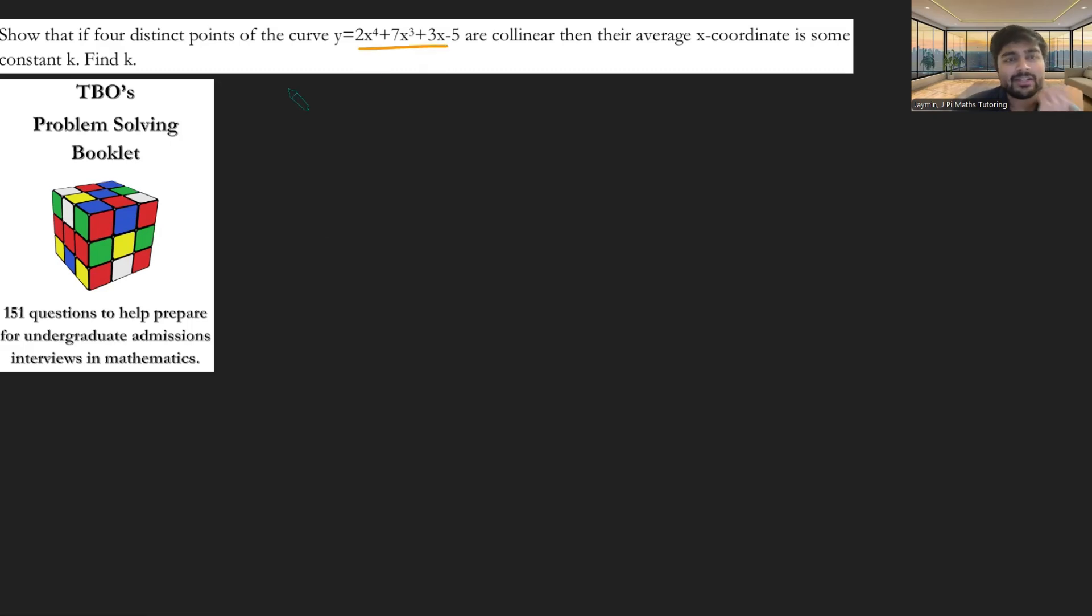Now, you might think of various things here of what to do. You might think of, well, what does this look like? These numbers are kind of random, 2, 7, 3, minus 5. Maybe this factorizes nicely. Maybe I can sketch this. But it turns out we don't really need to have a super amazing sketch of this, but that's an idea you could have.